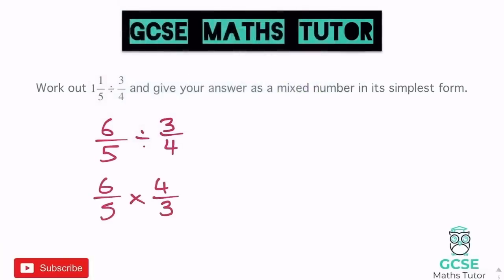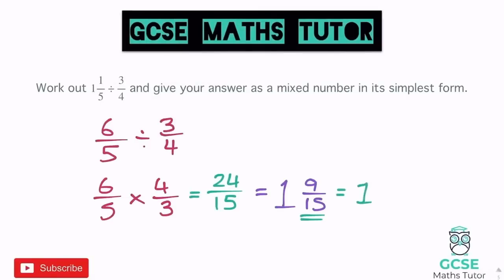Multiplying fractions: we just multiply the top and multiply the bottom. So 6 times 4 is 24, and 5 times 3 is 15. We get 24 over 15. It says to give the answer as a mixed number in its simplest form. I'm going to turn it into a mixed number first: 15 goes into 24 once, with a remainder of 9. So we have 1 and 9 over 15. This fraction does simplify — they both divide by 3: 9 divided by 3 is 3, and 15 divided by 3 is 5. So the final answer is 1 and 3 fifths.